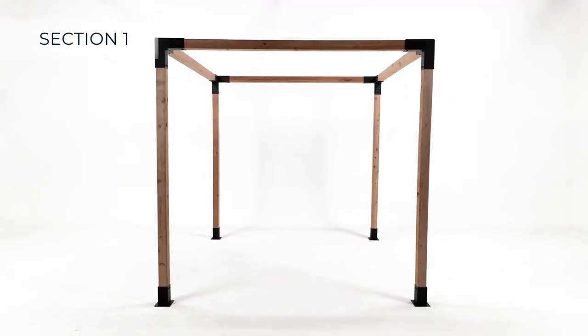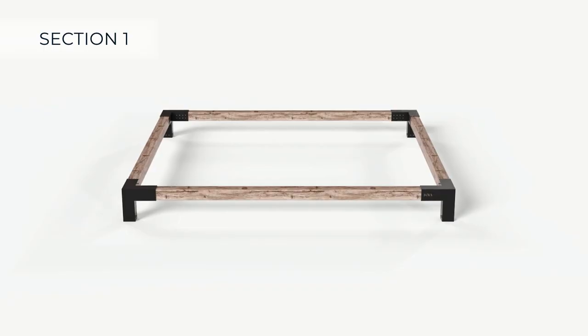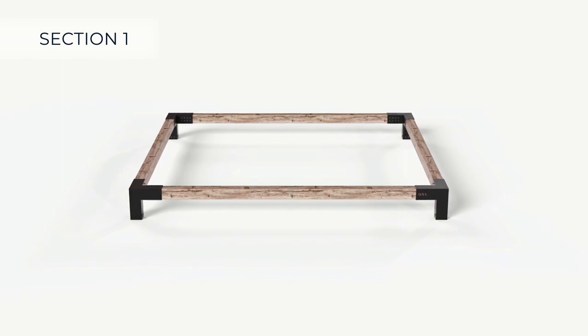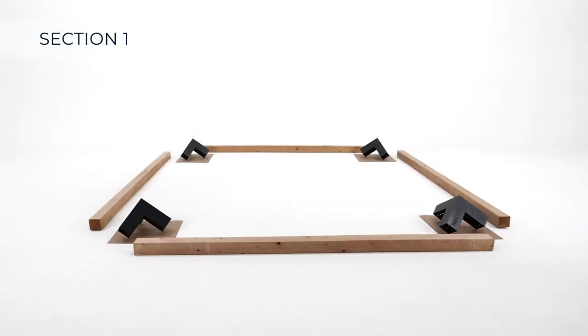For a single pergola build of any size, the first step is to build the top. First, lay out your brackets and lumber for the top using cardboard underneath the brackets to prevent damage.